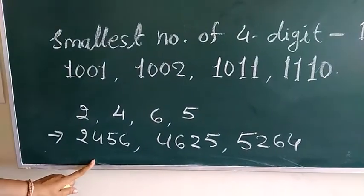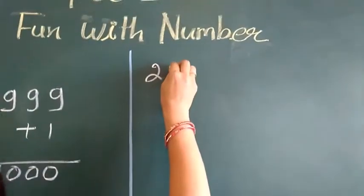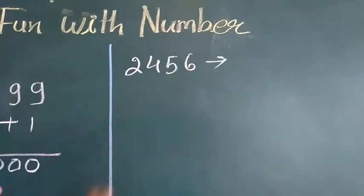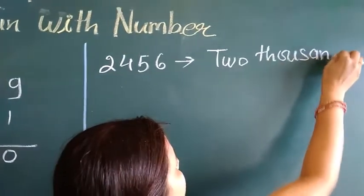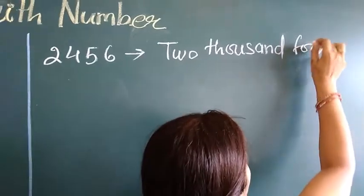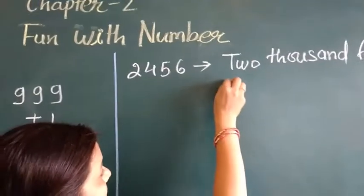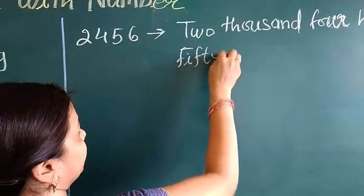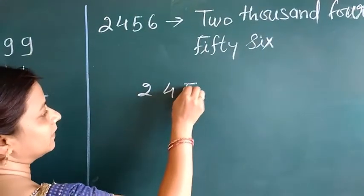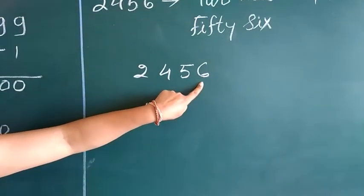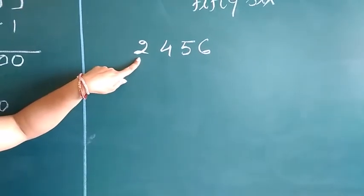Let's take the example of 2,456. What is the number name of these numbers? In 2,456: 6 is in the ones place, 5 is in the tens place, 4 is in the hundreds place, and 2 is in the thousands place.